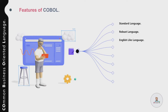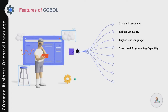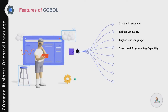The third feature is that COBOL is an English-like language and it is very user-friendly. All instructions are coded using English words rather than complex code. For instance, if you want to read a record from a file, you will use the verb READ. So COBOL is relatively easy to understand.